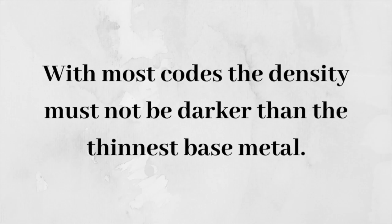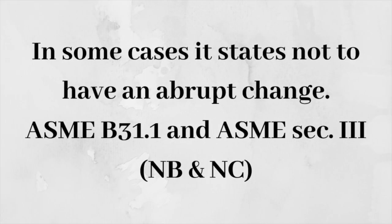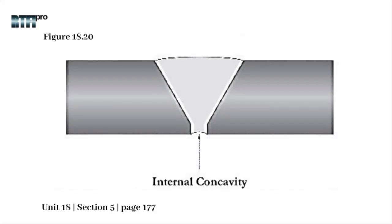With most codes, the density must not be darker than the thinnest base metal. However, in some cases, it states not to have an abrupt change as in ASME B31-1 and ASME Section 3, NB and NC. The abrupt change is referring to the density difference between the concavity and base metal, and the concavity cannot exceed the thinnest wall.